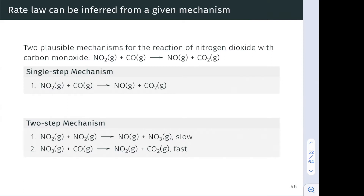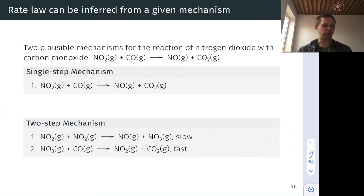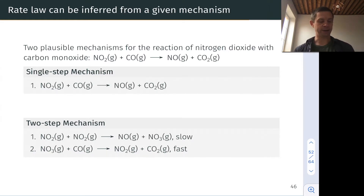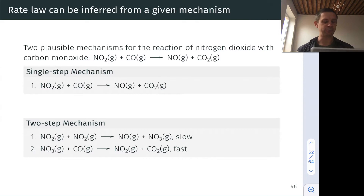Let's consider the reaction of NO2 gas with CO gas to form products. Let's imagine also that there are two plausible mechanisms: a single-step mechanism in which an oxygen atom is transferred in one step, and a two-step mechanism in which an oxygen atom is transferred between NO2 molecules first, and then an NO3 reactive intermediate transfers an oxygen to CO to form CO2.